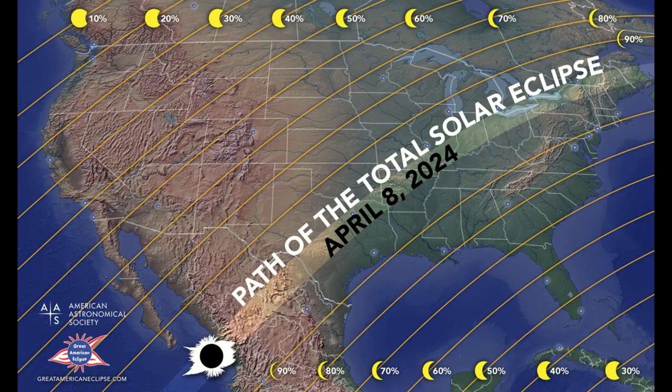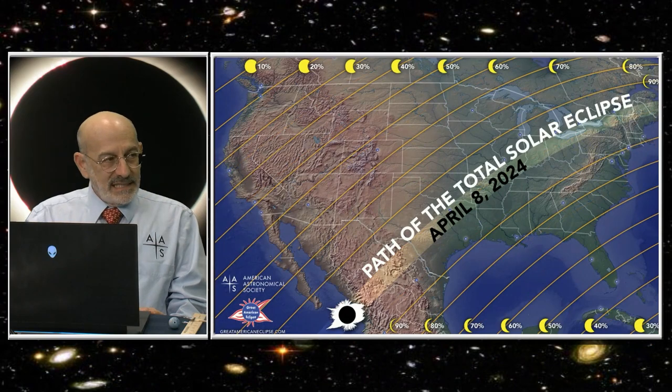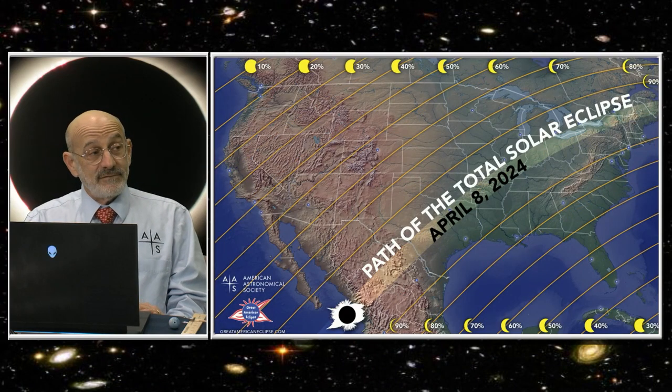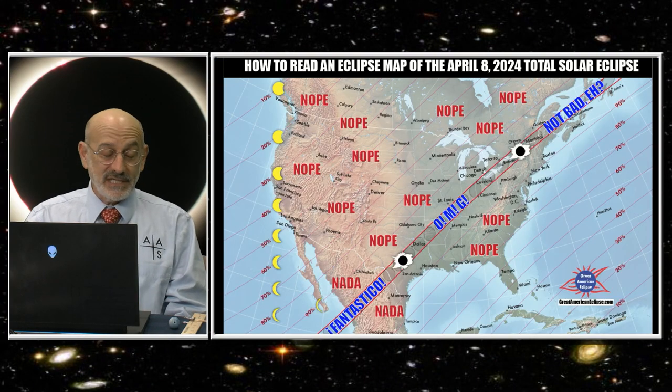The thing is, if you hear in the media that a total solar eclipse is coming to the United States and it's going to touch 13 states and they mention your state, you might think, oh boy, we're going to have a total solar eclipse. But only if you're within that path.